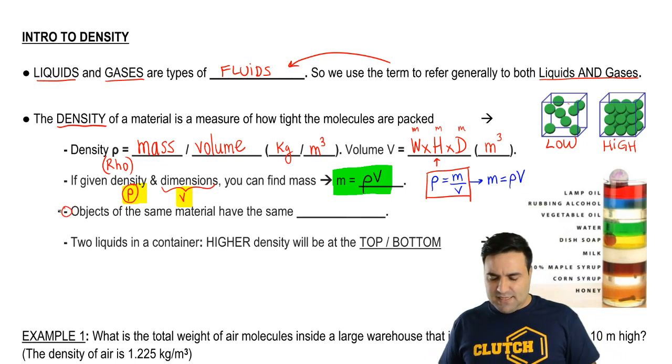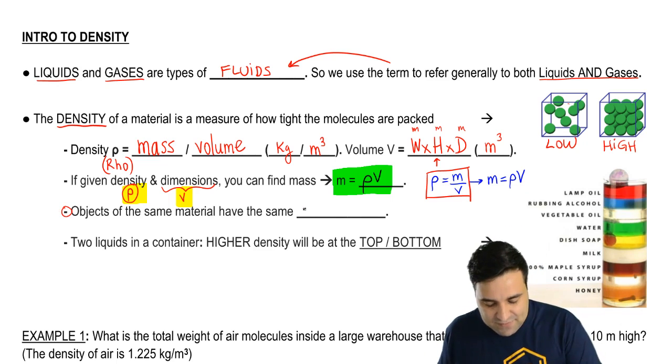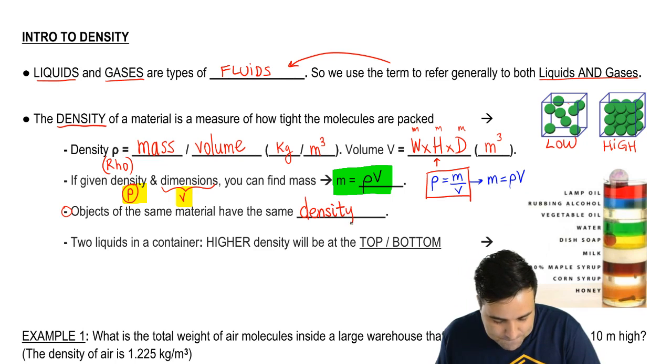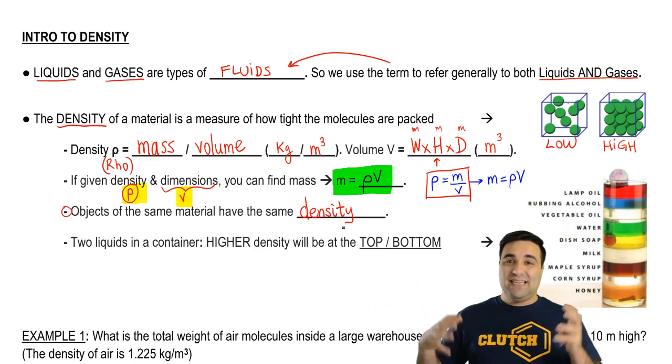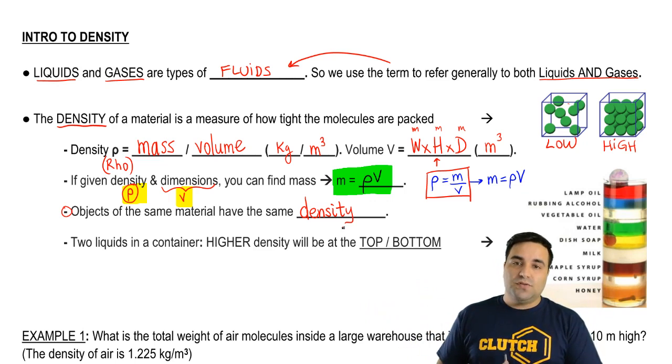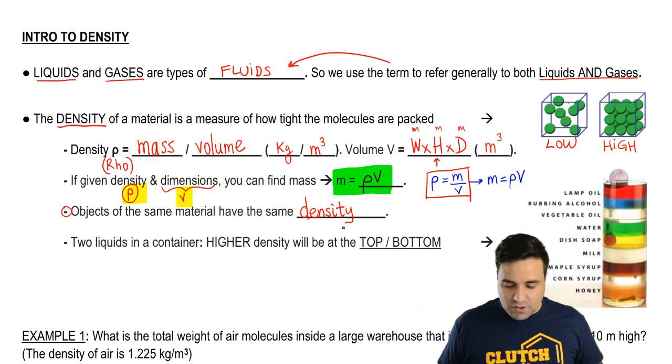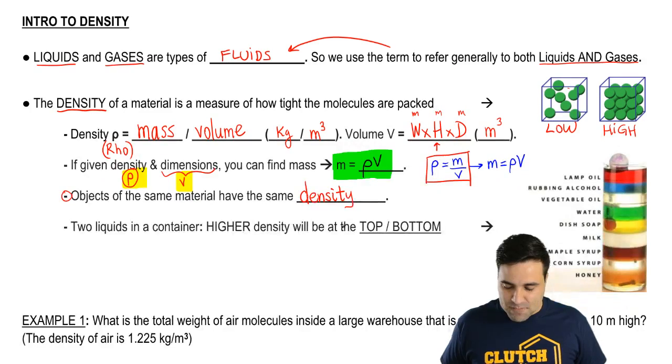Sometimes you see something that says that objects have the same material. In density problems, this usually means that they have the same density. So if you have two pieces of wood and we say it's the same kind of wood, you can also infer that they have the same density.